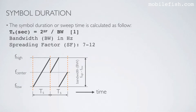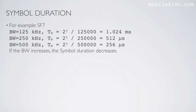The symbol duration or sweep time is calculated using this equation. So this is a symbol and this is its symbol duration. Here is another symbol and this is its symbol duration. For example, the spreading factor is 7. Here are different bandwidths and the corresponding calculated symbol durations. As you can see, if the bandwidth increases, the symbol duration decreases.